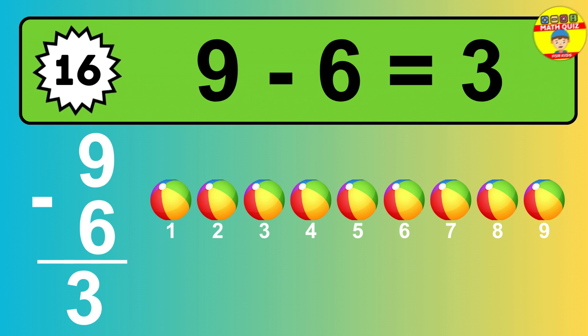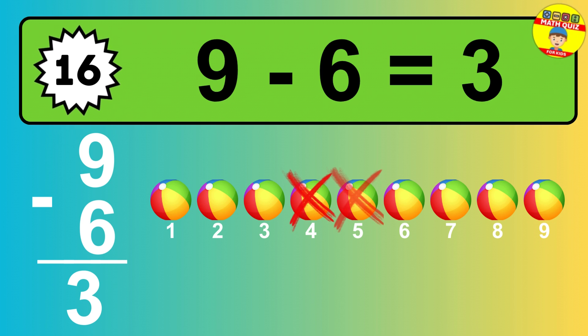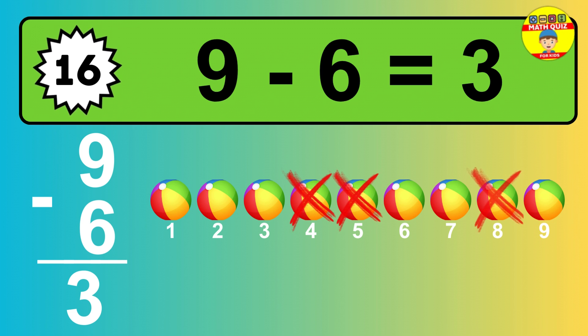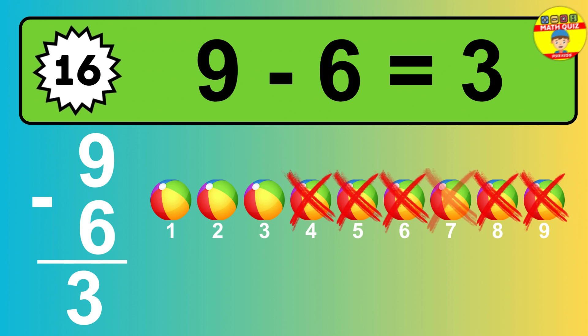Question sixteen: nine minus six equals what? So the answer is, nine minus six is three. Let's count it. One, two, three.